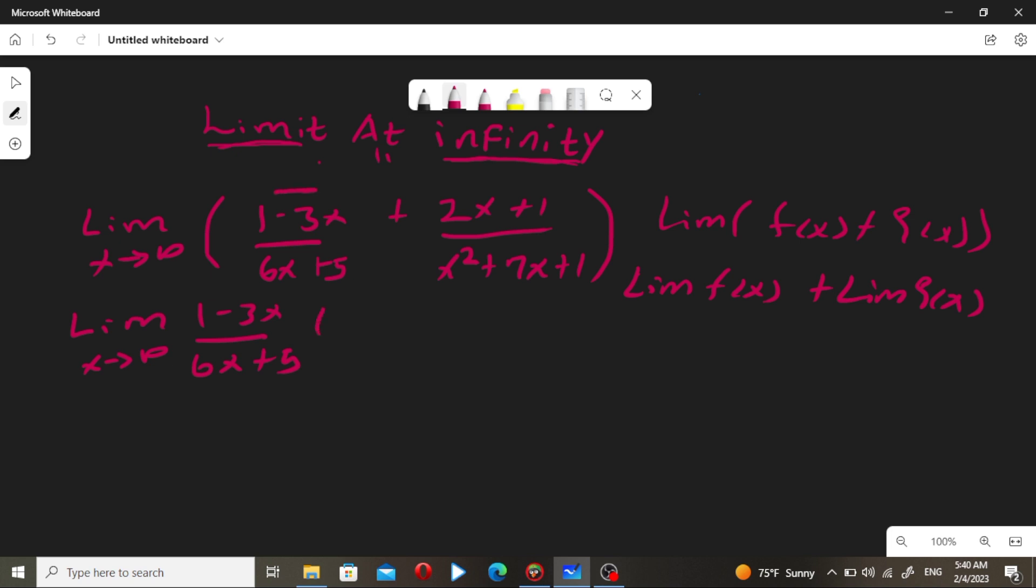Plus the limit of 2x plus 1 over x square plus 7x plus 1 as x approaches infinity. Now for the first term, the significant power is 1. So we use the coefficient: minus 3 over 6.